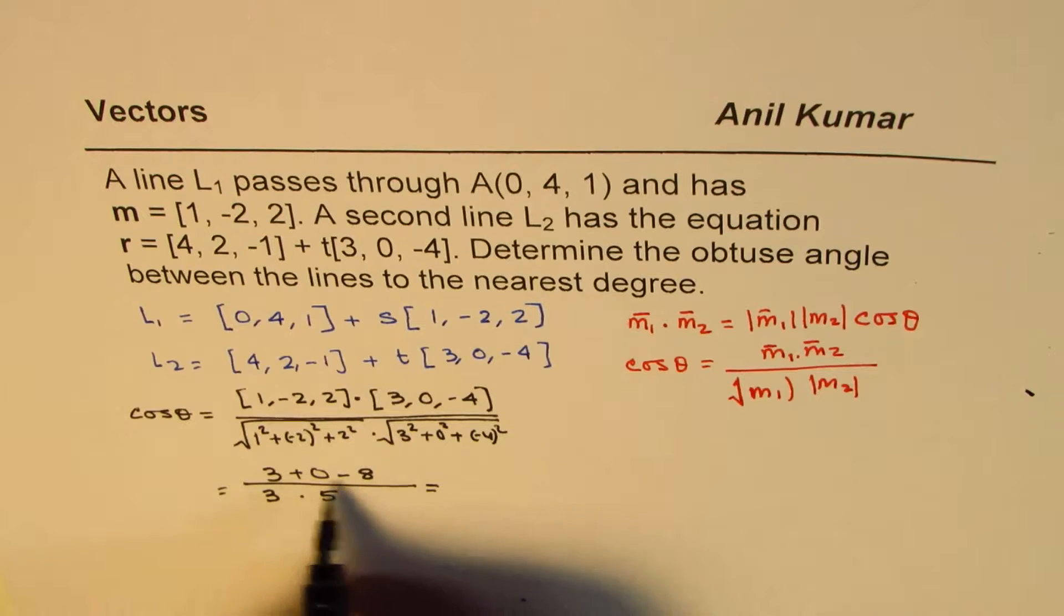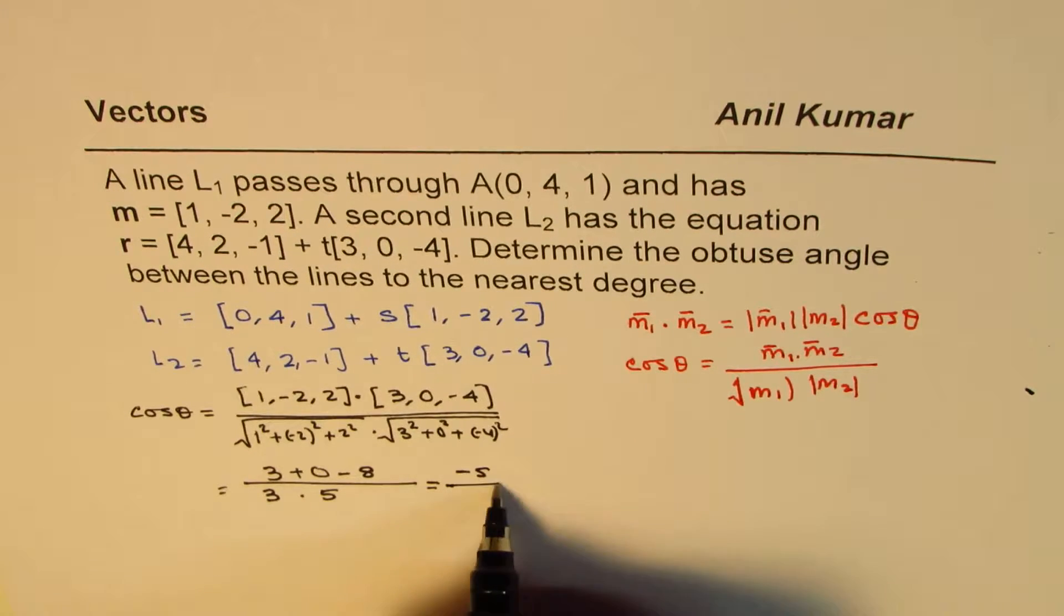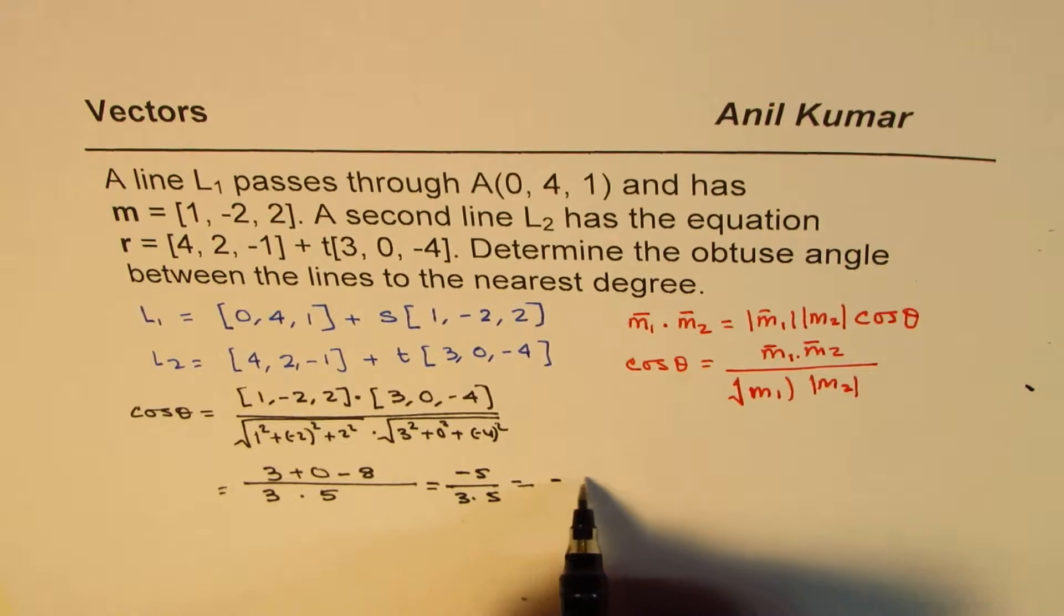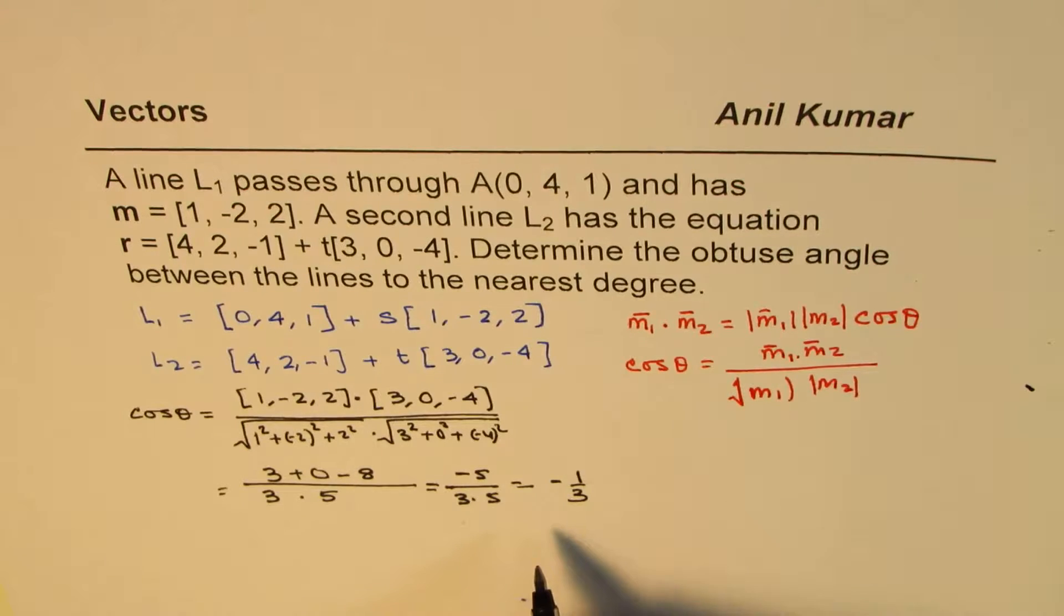So I could write this as 3. And here we have 3 squared plus 4 squared, which is 25. So 3 times 5. So that becomes the ratio. So 3 minus 8 is minus 5 over 3 times 5. That gives you minus 1 over 3.